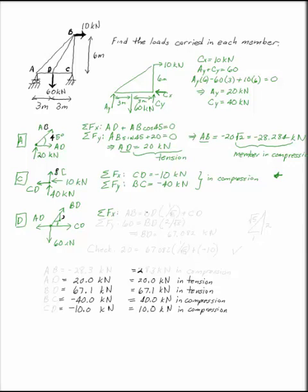Sum of the forces in X says AB equals BD, and the component of that will be 1 over the square root of 5, because a 1 over 2 triangle has a hypotenuse of the square root of 5, plus CD. Sum of the forces in Y says 60 equals BD times 2 over the square root of 5. So BD is equal to 67.082 kilonewtons.